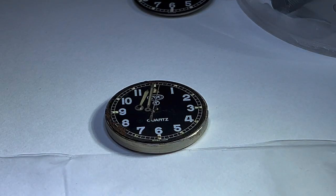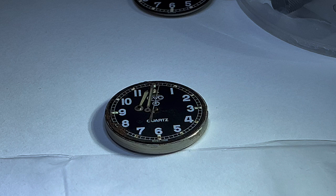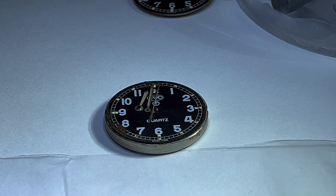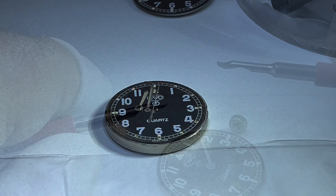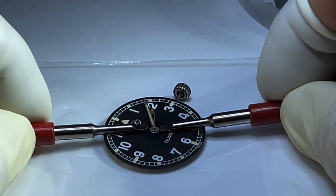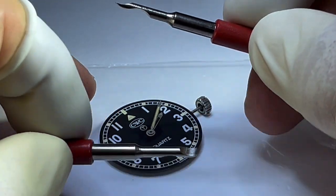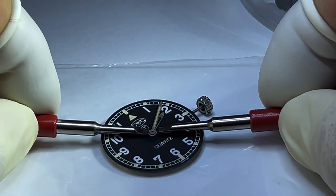One further risk here, in particular with watches that have tritium tubes at the indices, is that as you lower the ends of the levers, the levers come into contact with the edge of the dial and can damage the tritium tubes or other applied markers. So take care and if necessary just rotate the dial slightly to avoid them as you push down on the levers.